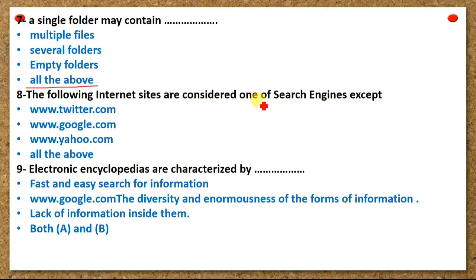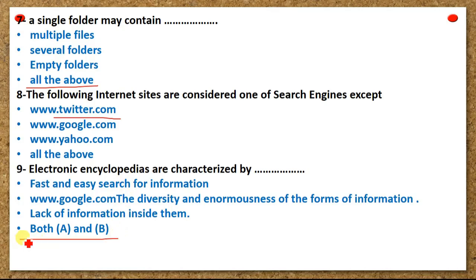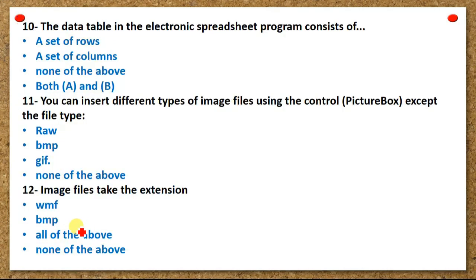Eight — the following internet sites are considered search engines except: www.twitter.com, www.google.com, www.yahoo.com, or all of the above. Nine — electronic encyclopedias are characterized by: fast and easy search for information, the diversity and enormousness of the forms of information, lack of information inside them, or both A and B. Ten — the data table in the electronic spreadsheet program consists of: a set of rows, a set of columns, none of the above, or both A and B.